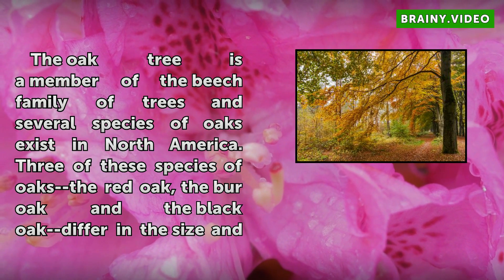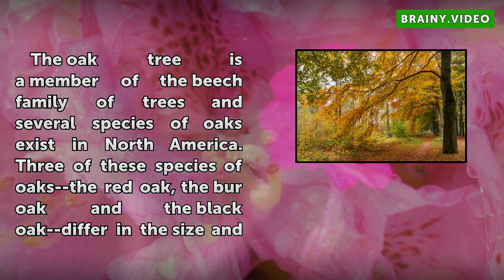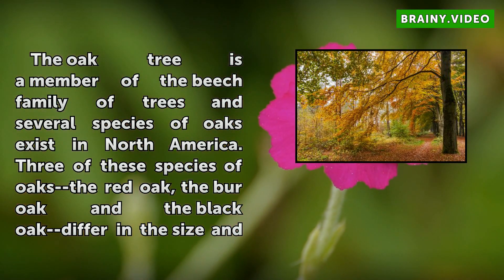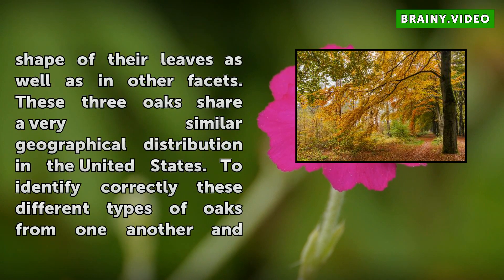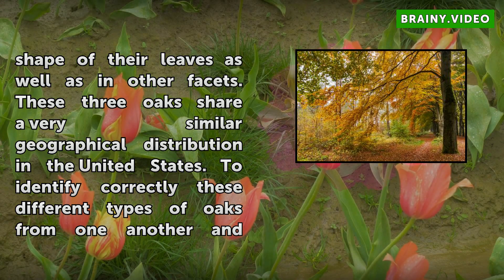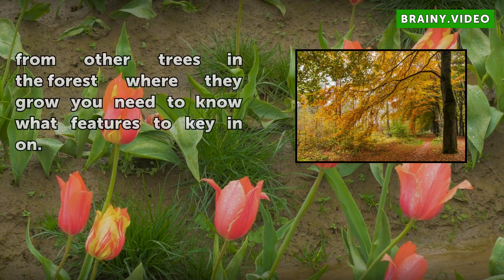The oak tree is a member of the beech family of trees, and several species of oaks exist in North America. Three of these species — the red oak, the bur oak, and the black oak — differ in the size and shape of their leaves as well as in other facets. These three oaks share a very similar geographical distribution in the United States. To correctly identify these different types of oaks from one another and from other trees in the forest where they grow, you need to know what features to key in on.